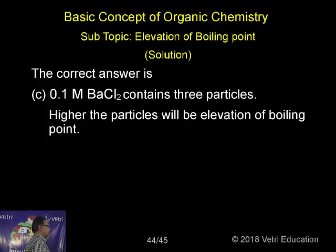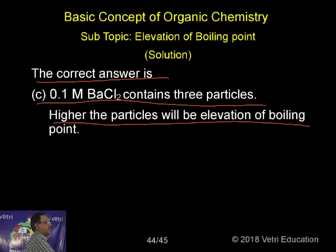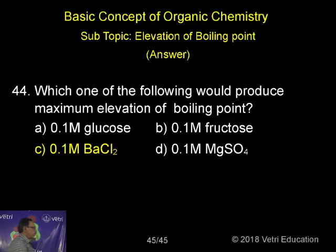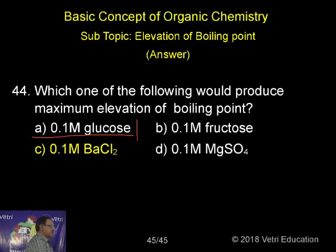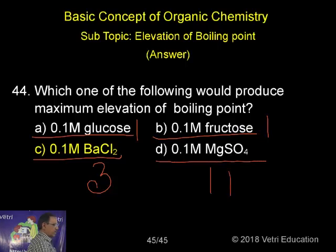So the answer is C — 0.1M barium chloride — because it contains three particles: one Ba²⁺ and two Cl⁻. 0.1M glucose gives only one particle (organic, non-electrolyte). 0.1M fructose also gives one particle (organic). 0.1M magnesium sulfate gives one Mg²⁺ and one SO₄²⁻, that is two particles. Barium chloride has the highest number of particles.